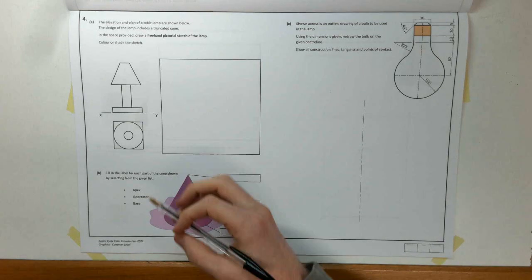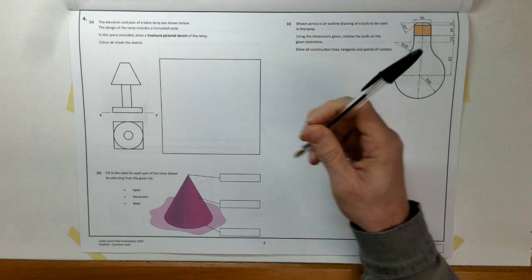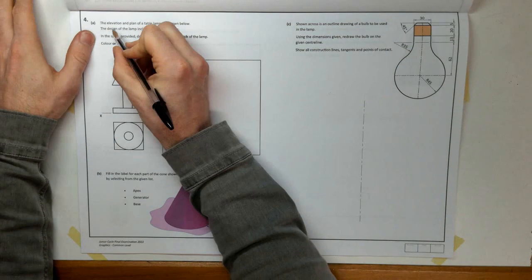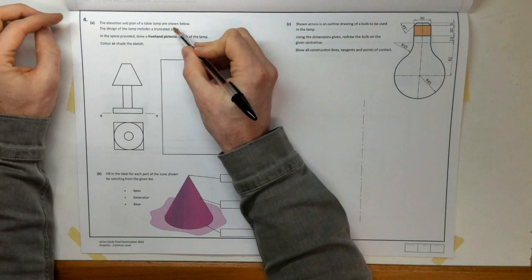Welcome to the 2022 paper, Question 4. Part A, the elevation and plan of a table lamp are shown below.